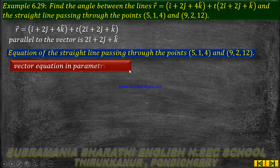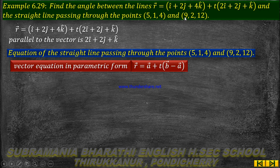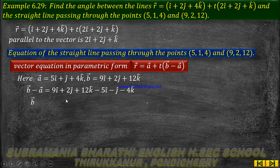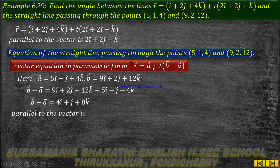For the second line passing through the two points, the direction vector is b vector minus a vector. The first point is (5,1,4) and the second point is (9,2,12). So b vector minus a vector gives: (9-5)i cap plus (2-1)j cap plus (12-4)k cap, which is 4i cap plus j cap plus 8k cap.